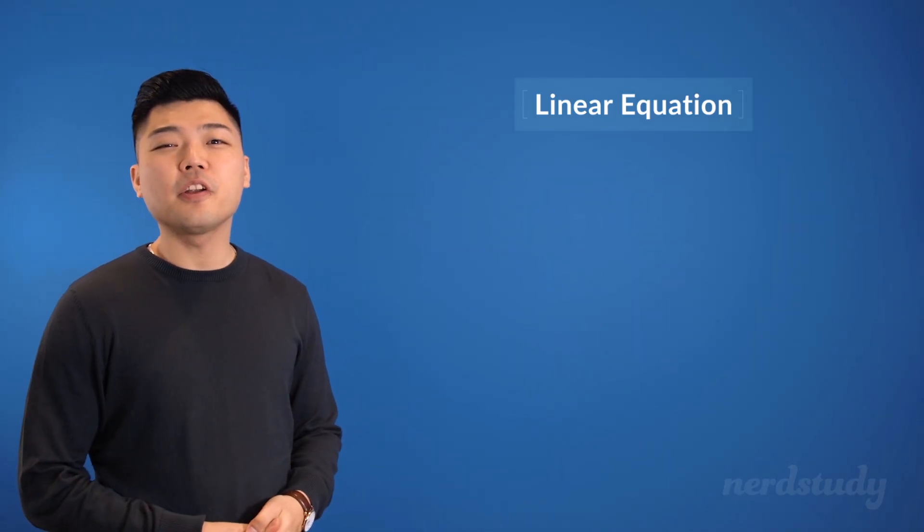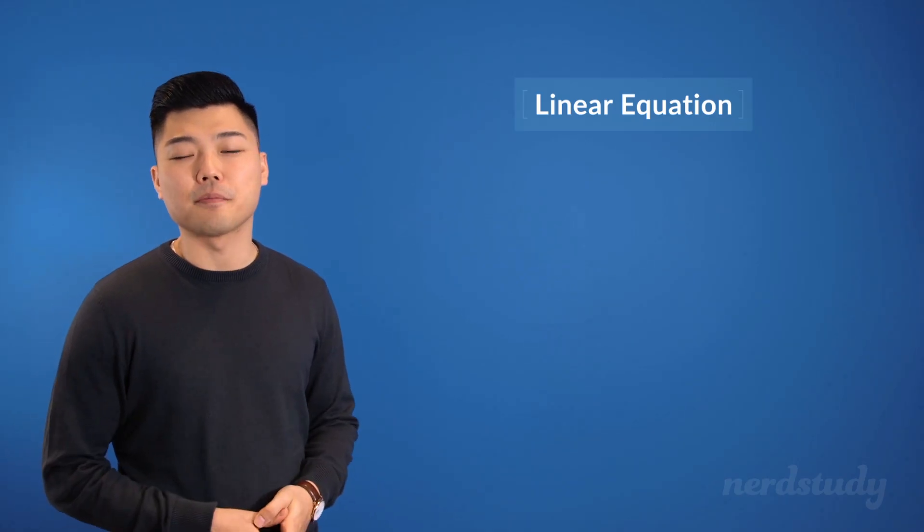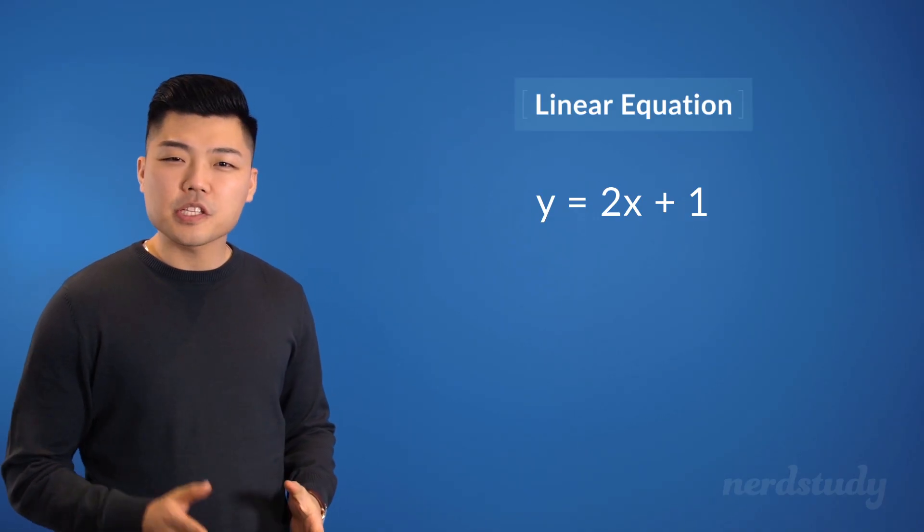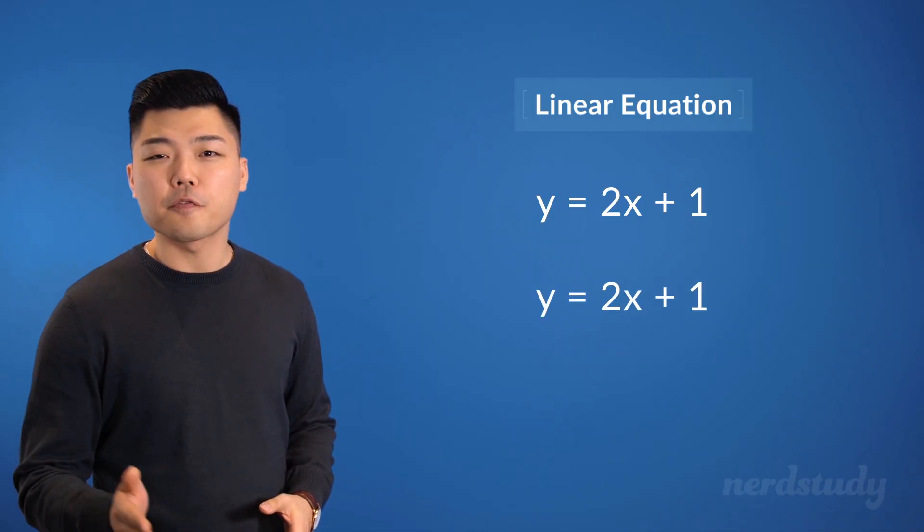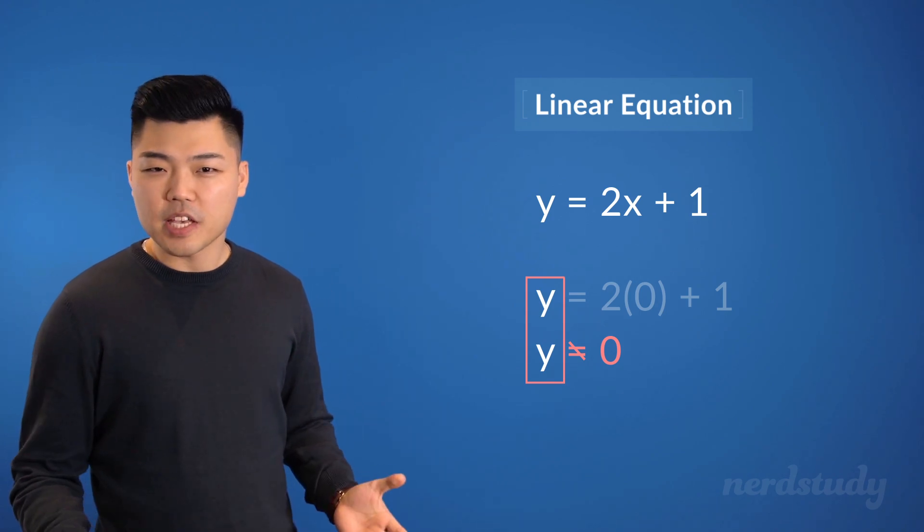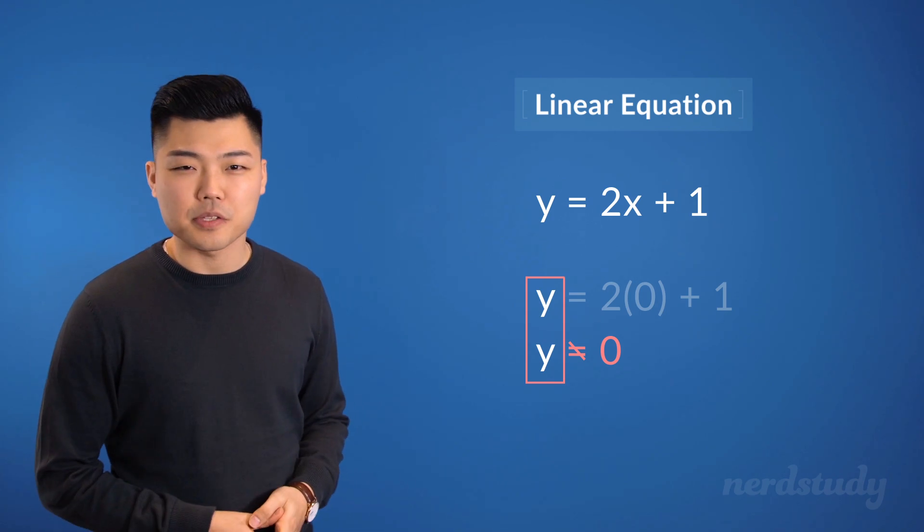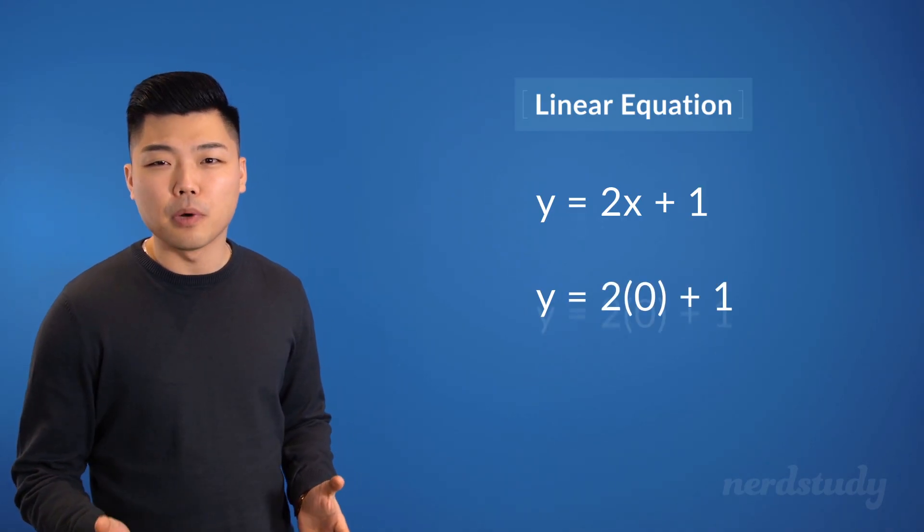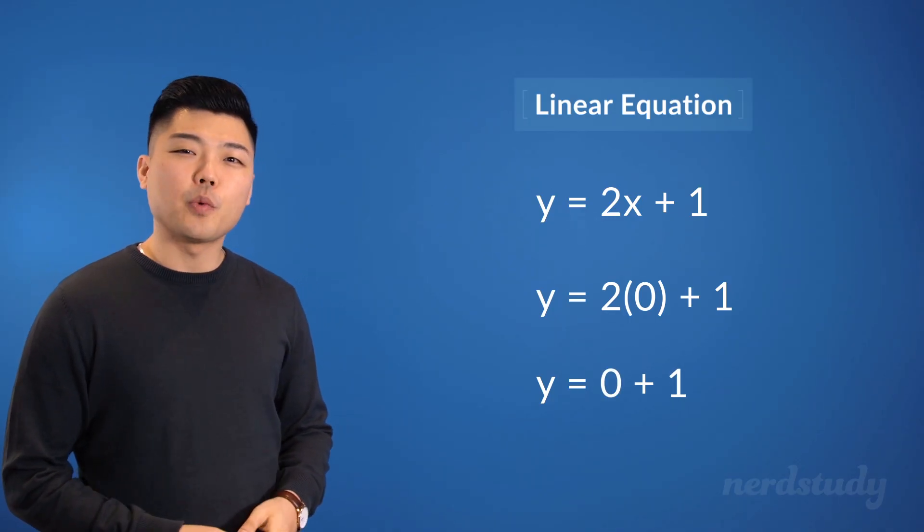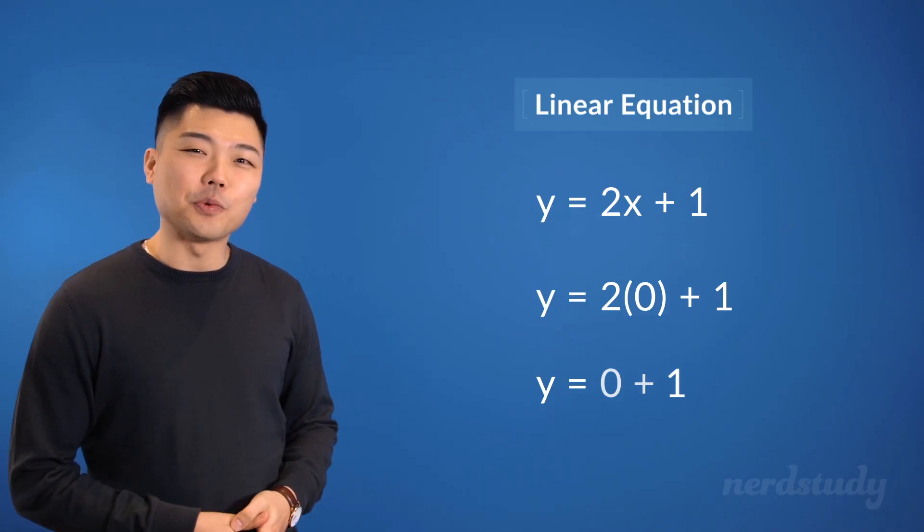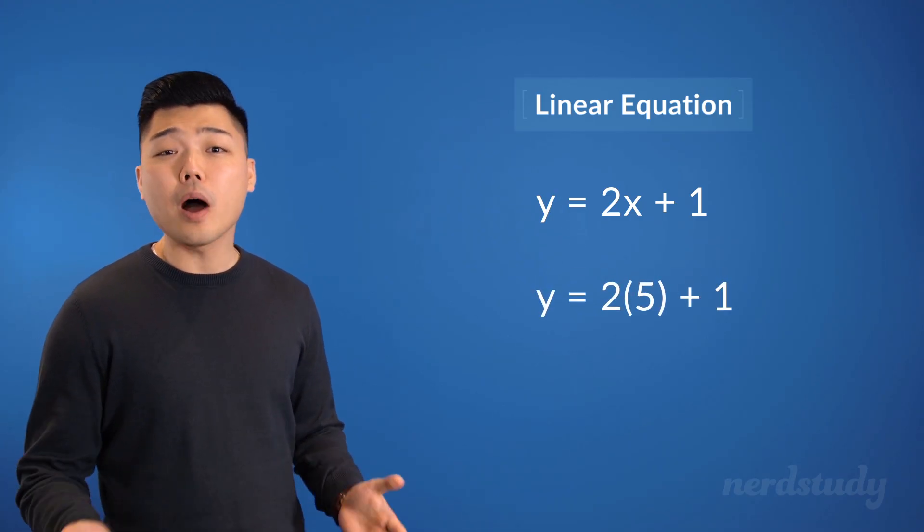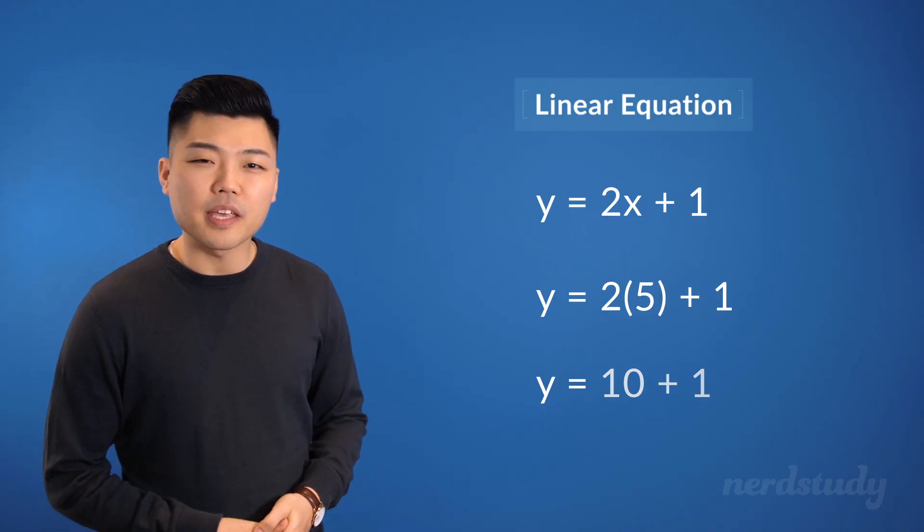However, some other linear equations are a bit more sophisticated. Let's take a look at the equation that we looked at in the beginning of the video. In this linear equation, if we put 0 in for x, notice how our y value is not automatically equal to 0, as was the case in the equation of y equals x. Instead, we are first required to multiply the 0 value with 2, and then add by 1. Thus, when x is equal to 0, y is equal to 1. And what if x was equal to 5? Well, then y would be equal to 10 plus 1, making it 11.